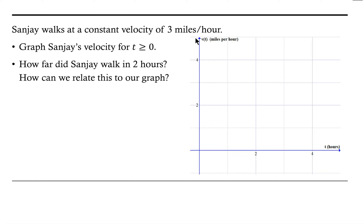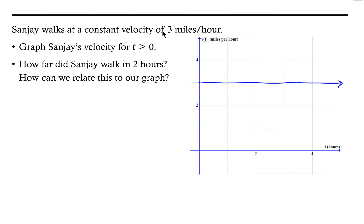Let's go ahead and graph Sanjay's velocity for t greater than or equal to 0. Notice that our vertical axis is labeled in terms of miles per hour, and our horizontal axis is labeled in terms of hours. So if Sanjay is walking at a constant velocity of 3 miles per hour, the graph of his velocity would look like a horizontal line at 3 on the vertical axis.